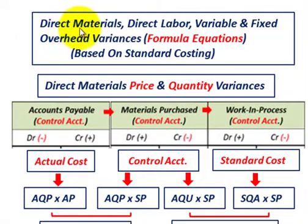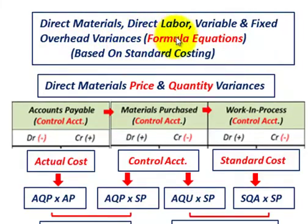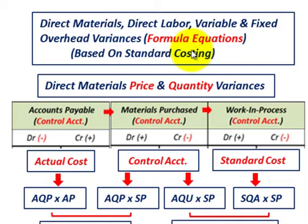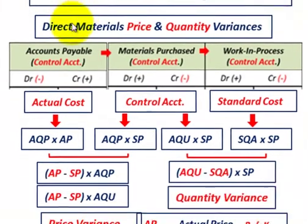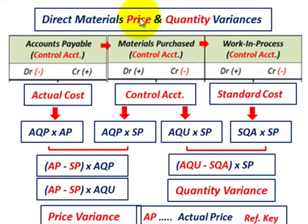What we're going to be going over here is direct materials, direct labor, variable and overhead variances. We're going to be looking at the formulae and equations to calculate these variances, based on a standard costing system. We'll start with direct materials, looking at the price and quantity variances.